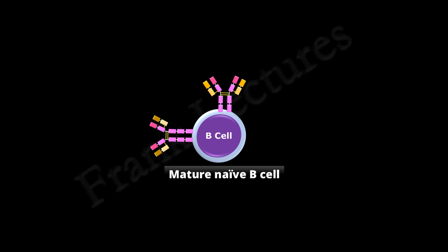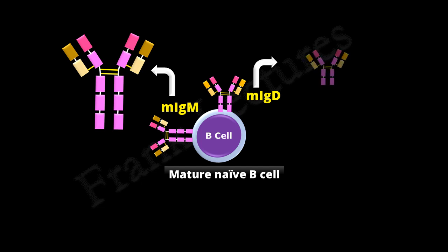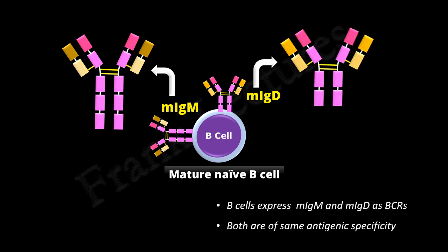Each mature naive B cell expresses membrane-bound immunoglobulin M and membrane-bound immunoglobulin D as its B cell receptors. Both of these receptors are of the same antigenic specificity, meaning both recognize the same epitope on an antigen. The function of these B cell receptors is to recognize and bind the specific antigen. For B cell activation, the nucleus of the B cell must receive the signal that a specific antigen has been recognized and bound.